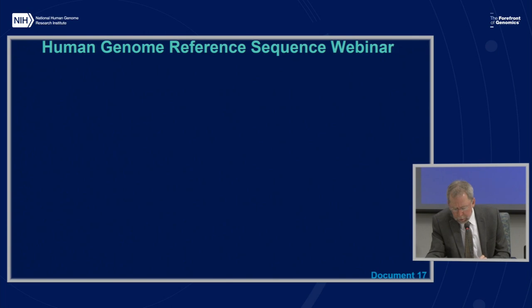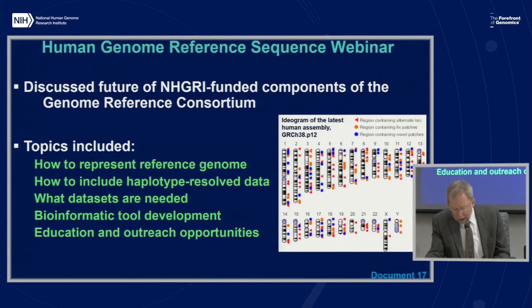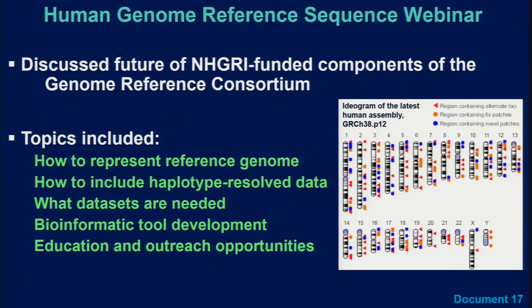NHGRI staff recently convened a four-hour webinar in March to discuss the human genome reference sequence. Over 65 stakeholders discussed the future of NHGRI-funded components of the genome reference consortium. Topics included how the reference — which currently includes 261 alternate loci, 70 fixed patches, and 70 novel patches — should be represented, how to include haplotype-resolved data, what additional data sets are needed, what bioinformatics tools should be developed, and how the consortium can improve education and outreach for the basic science and clinical communities.